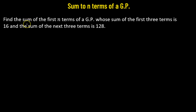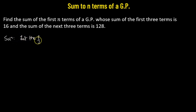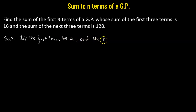In this problem, we need to find the sum of the first n terms of a geometric progression, such that the sum of the first three terms is 16 and the sum of the next three terms is 128. We will suppose that the first term is represented by the letter A, and the common ratio will be represented by the letter R in lower case.